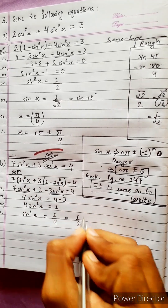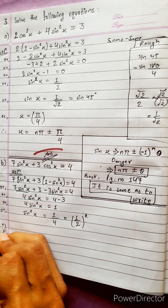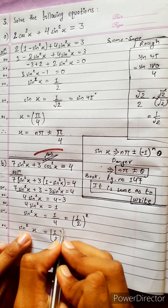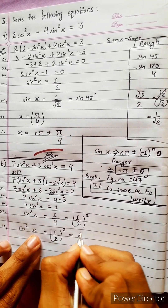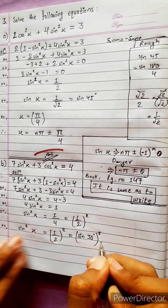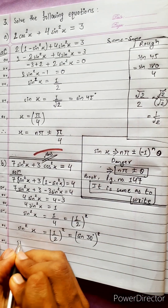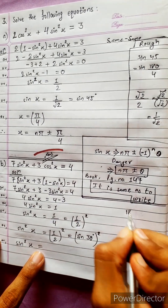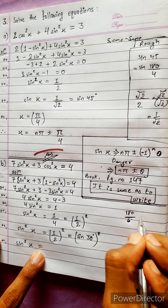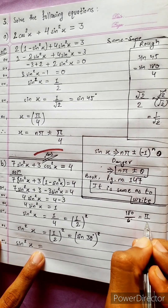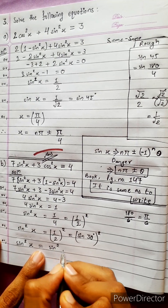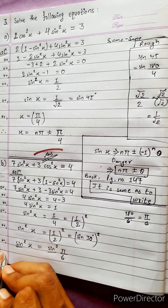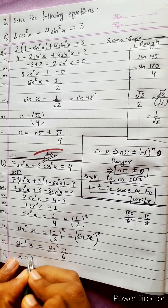1/4 equals (1/2)², and sin 30 degrees equals 1/2, so sin²x equals sin²(30 degrees) equals sin²(pi/6). Cancelling sin² on both sides, x equals pi by 6.